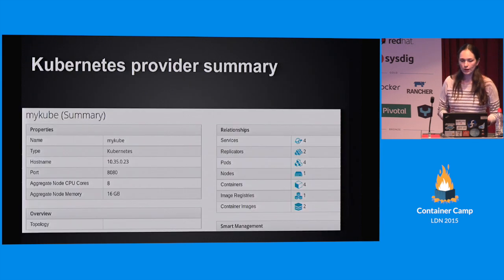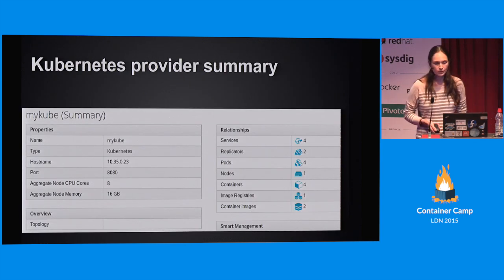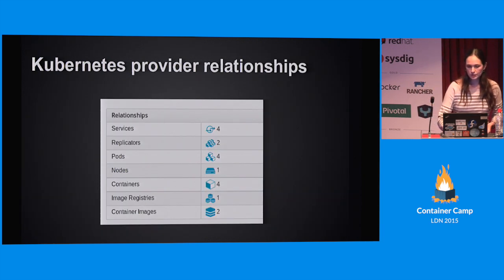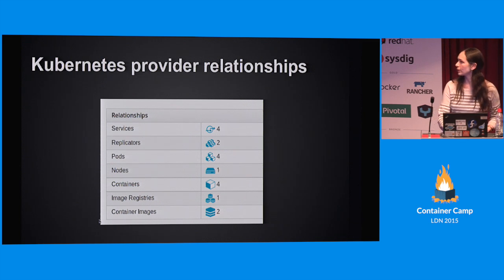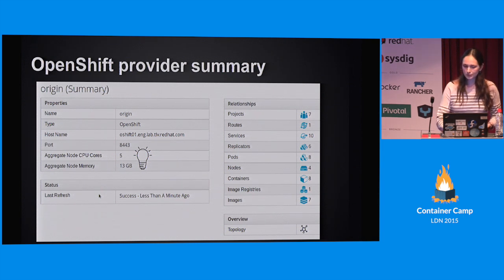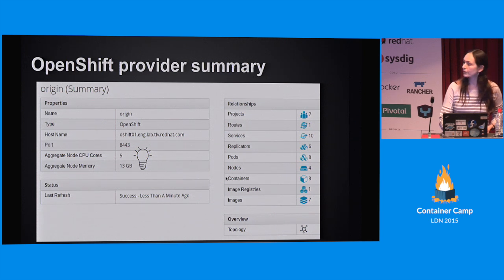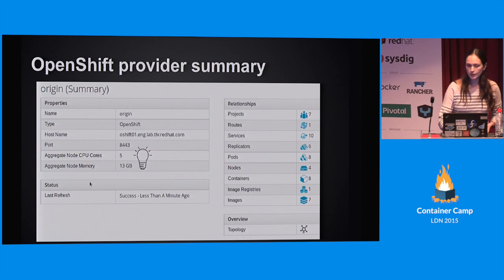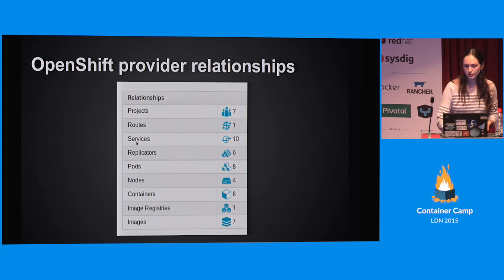This is an example of how a new provider summary page looks like, and I'm going to zoom in into the entities. As you can see, these are services, replication controllers, pods, and nodes coming from the Kubernetes environment. Those three entity types - containers, images, and registries - are something that we are deducing in ManageIQ. The OpenShift side looks quite similar with some subtle differences. For example, since I have four nodes in my environment, I can get aggregated info on the capacity of those nodes on the provider side. The entities are pretty much identical to the Kubernetes ones, but I also have the OpenShift-specific ones collected as well.